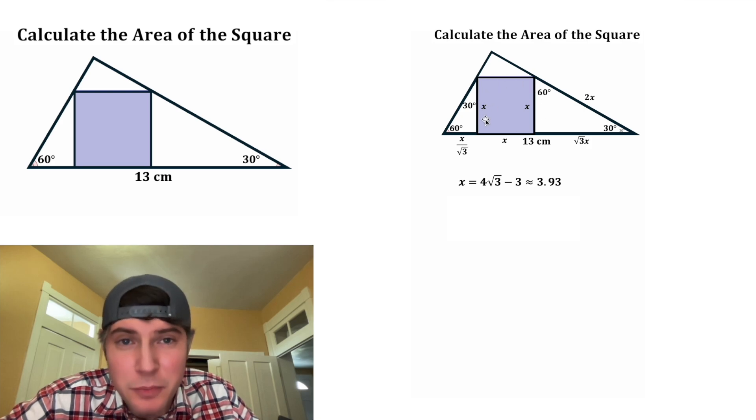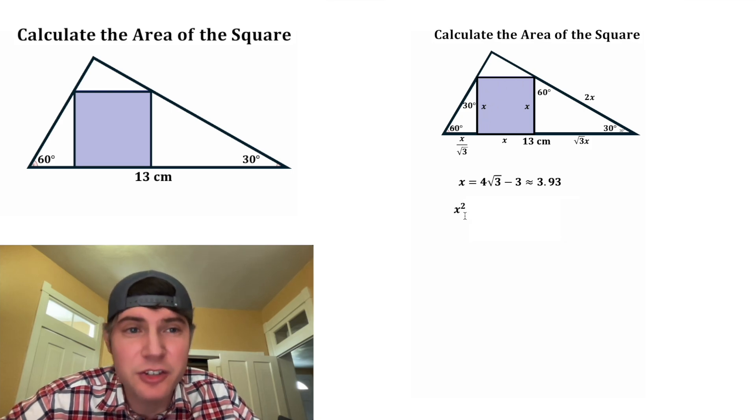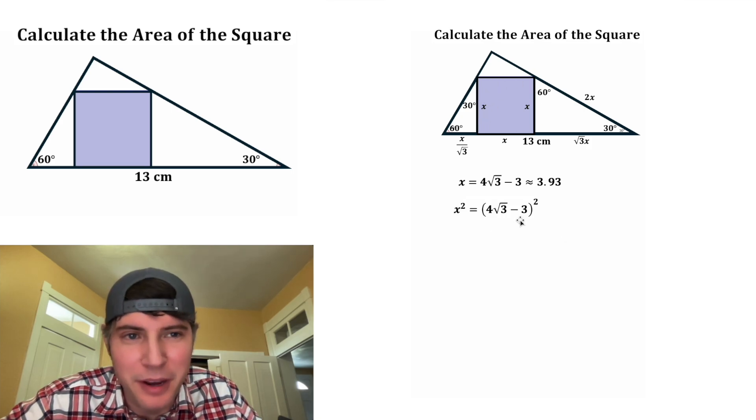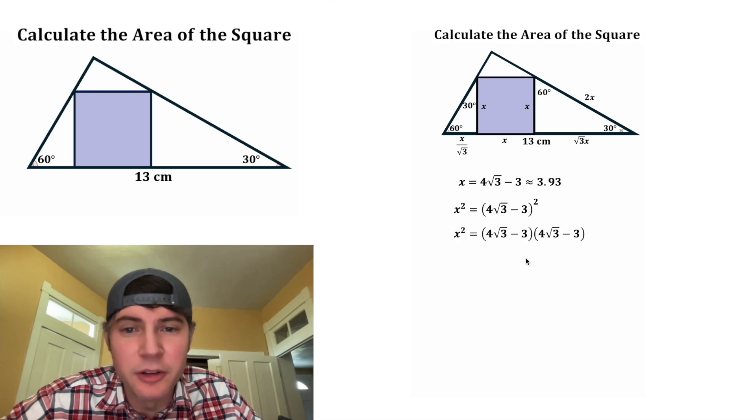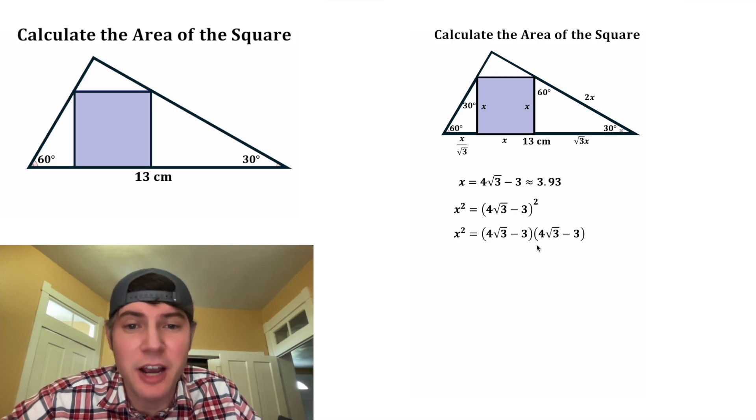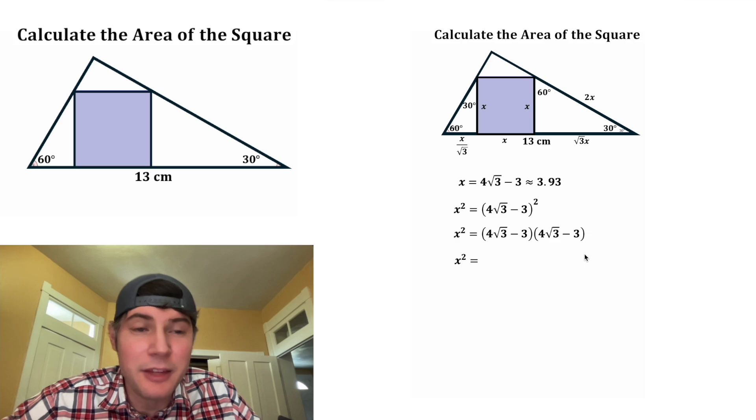And now to find the area of this purple square, it's going to be X squared. That means four radical three minus three squared, or in other words, four radical three minus three times four radical three minus three. And then we can multiply that out.